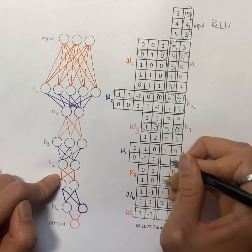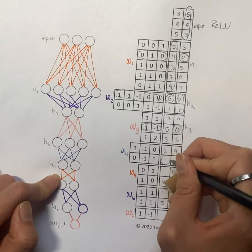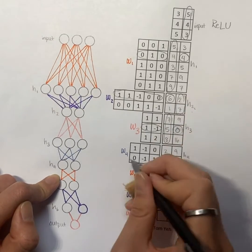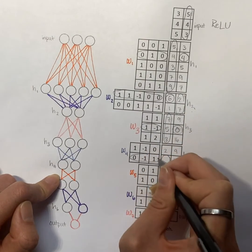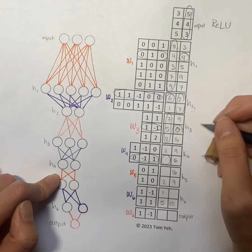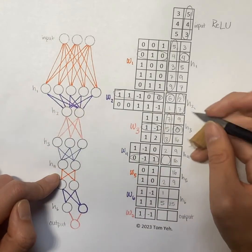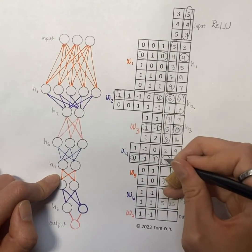For hidden layer 4, we will look at this column in hidden layer 3 multiplied by the bottom row of weights in weight matrix 4. So that is 8 minus 5 is 3.